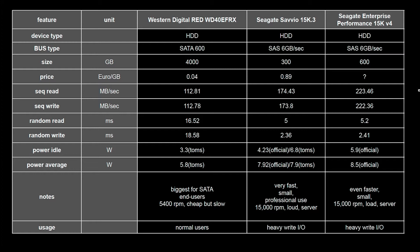For hard drives, here I depicted three different devices. This first one is more like a device for normal users. This is heavy write I/O, and this is even heavier write I/O — something you would want for your PC or a server relying on a large number of drives. This is a SATA drive with a sequential read performance of 112 megabytes per second, sequential write at similar performance. Random read is 16.5 milliseconds on average, random write is about 18.58 milliseconds on average. The size is relatively big — this is a 4 terabyte drive. The ratio is 4 cents per gigabyte, which is really cheap and a good deal in many situations.